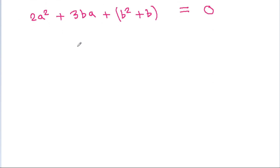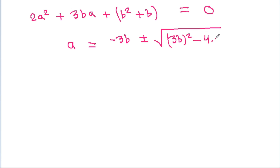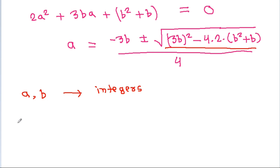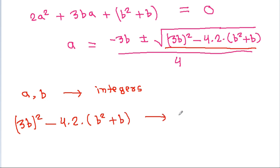Now this is a quadratic equation in a. So we can get a equals minus 3b plus or minus the square root of (3b)² minus 4 times 2 times (b squared plus b), all divided by 4. Since a and b are integers, the discriminant must be a perfect square. So 9b squared minus 8b squared minus 8b must be a perfect square.